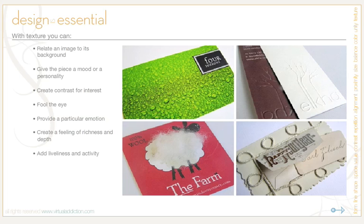You could create the feeling of richness and depth, or add liveliness and activity — for instance, if you foil stamp a word or two in the letterhead. Foil stamping is when a die is used to create dimension and then a foil is heat-set onto the paper. It's like a raised or indented portion of the paper with a metallic look, and it can definitely add quite a bit of texture to a piece.